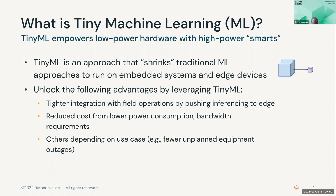By running anywhere, TinyML unlocks several advantages: tighter integration with field devices, creating a seamless bidirectional link. If you're more advanced, you can do device training and ship that model back to the cloud — that's called federated learning. Or you can train your model in the cloud and easily deploy it anywhere. These models are very small in nature, so they can run on very low-resource and constrained devices, even those with limited network bandwidth.